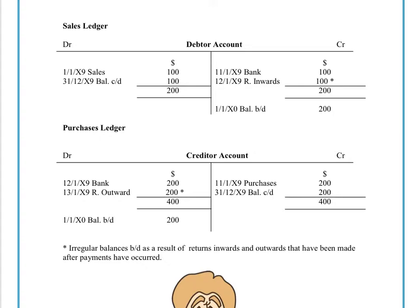Sometimes in the sales ledger, the balances — a majority of which should be on the debit side because a debtor is an asset to us and they owe us money — for some strange reason we get a balance brought down on the credit side. In the purchases ledger, which contains all our creditors, the majority of balances brought down will obviously be on the credit side because we owe our creditors money for the supplies that they've given us on credit.